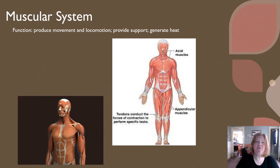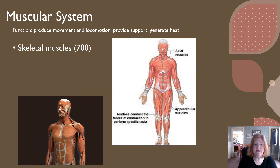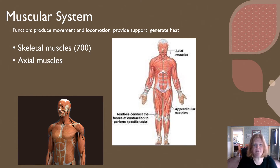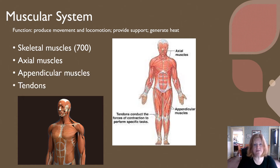On to the muscular system. The muscular system produces movement, locomotion, helps you maintain your posture, provides support, and generates heat. It includes skeletal muscles — roughly around 700, over 650 is often a number you'll see. It includes axial muscles and appendicular muscles, as well as tendons, which attach muscle to bone.